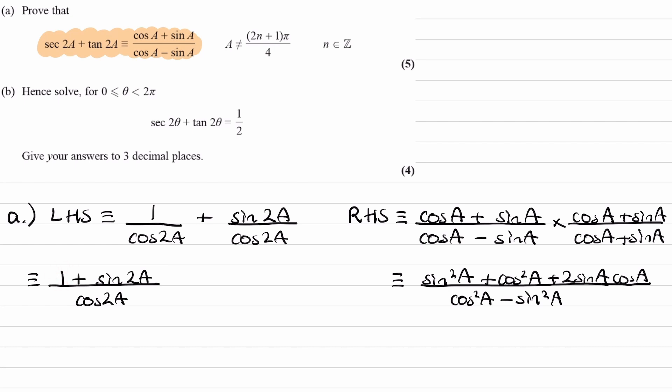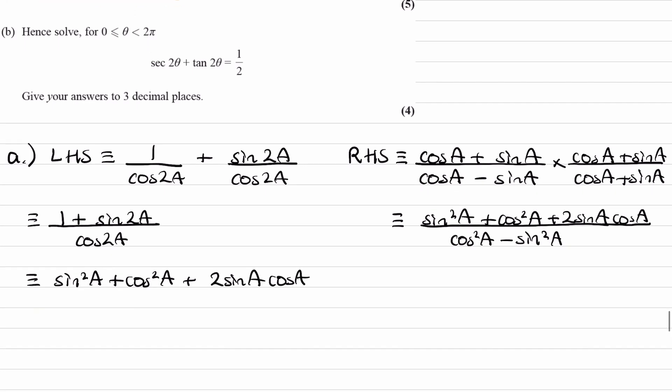So, for the left hand side, we can rewrite this as, so the 1 becomes sin squared a plus cos squared a. The sin 2a becomes 2 sin a cos a. And the denominator, as mentioned earlier, becomes cos squared a minus sin squared a. This is our right hand side, and that proves the identity in part a.